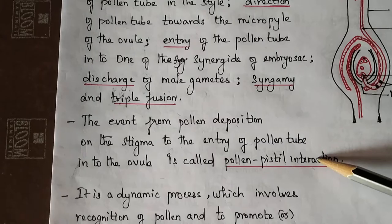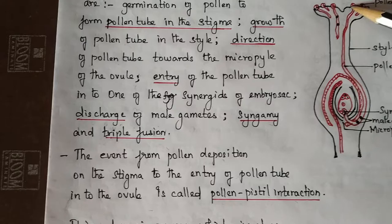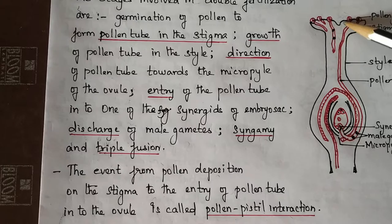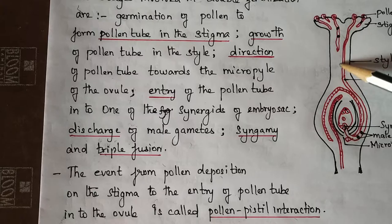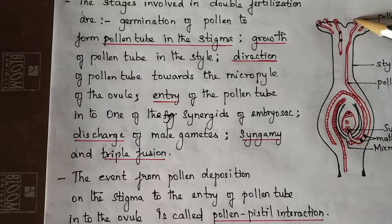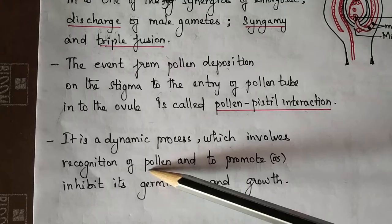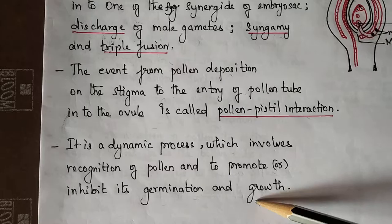The female reproductive organs are involved in pollen pistil interaction. It is a dynamic process which involves recognition of pollen — whether to promote or inhibit its germination and growth.